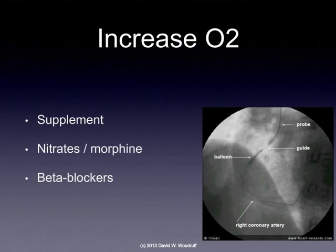There are three main components involved in increasing oxygen to our heart in the patient with heart failure. One is to supplement oxygen — give the patient additional oxygen, though there has been some debate about whether this is a worthwhile strategy. Nitrates, such as nitroglycerin, and morphine help to open up the coronary vasculature so more oxygen can get to the heart muscle.